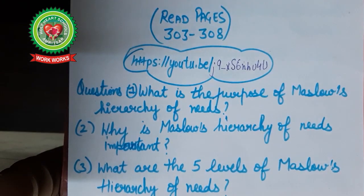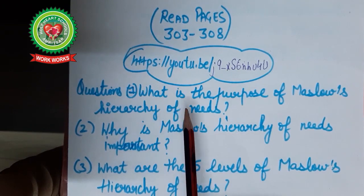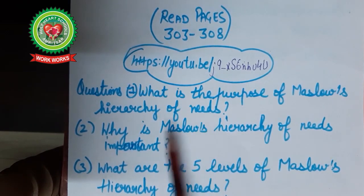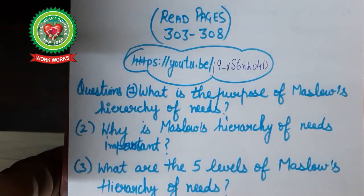I hope Maslow's theory of hierarchy of needs is now clear to everyone. Read pages 303 to 308 of your book properly to get a good hold of this theory. Do visit and refer to the given links for more clarity. Answer the following questions: What is the purpose of Maslow's hierarchy of needs? Why is it important? What are the five levels? Read your chapter carefully through to motivation. In the next week we will complete the directing chapter with the leftover portions on leadership and communication. Listen to school links and refer the reference links also. Thank you.